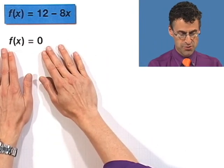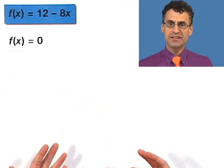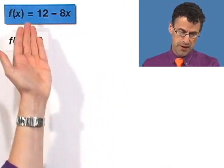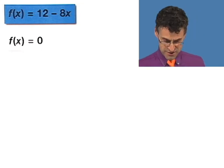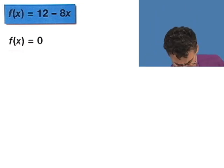Find out where the function equals 0, which is just a very fancy way of saying, take the function, set it equal to 0, and find the values for x which actually satisfy that. That's all it means.